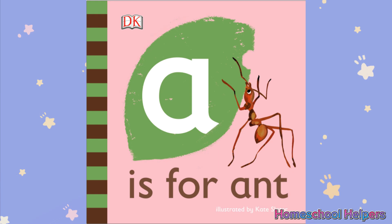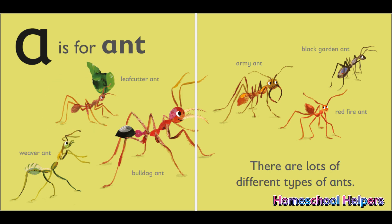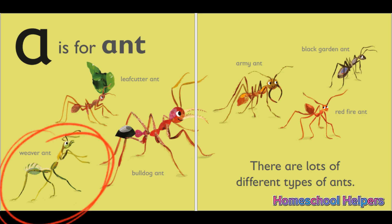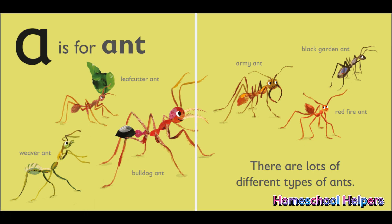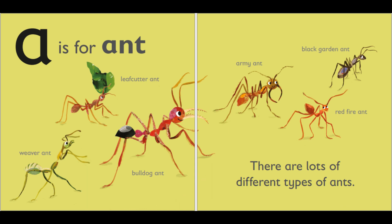A is for ant. There are lots of different types of ants. This is a leafcutter ant. This is a weaver ant. This is a bulldog ant. This is an army ant. This is a black garden ant. This is a red fire ant.